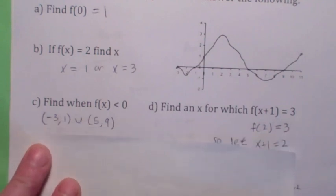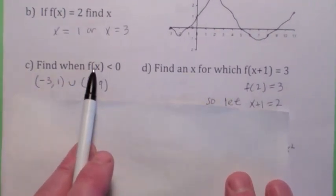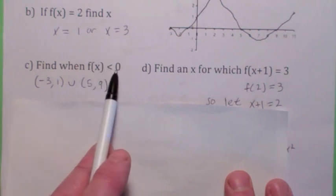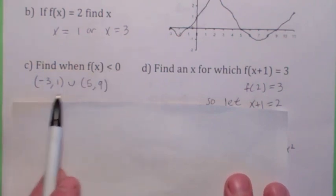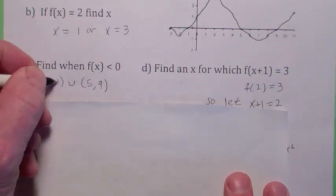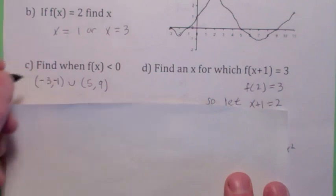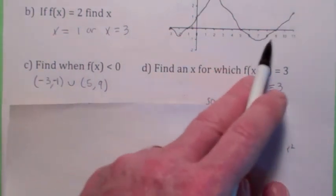How about this? When is f of x less than 0? Remember, f of x is y. So, they're asking, when is the y coordinate less than 0? Or, they're asking, when is the graph below the x axis? So, the graph is below the x axis from negative 3 to, should be negative 1, shouldn't it? Negative 3 to negative 1. And again, from 5 to 9. The graph is below the x axis.